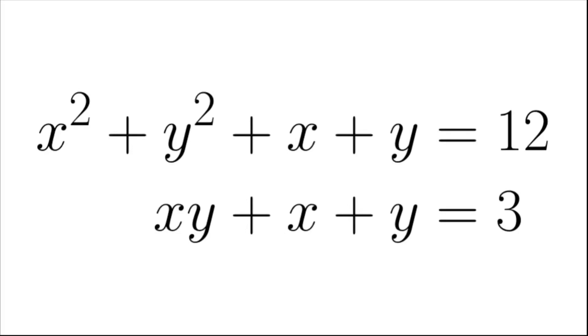In this video, we are going to find real numbers x and y such that x² + y² + x + y = 12, and xy + x + y = 3.